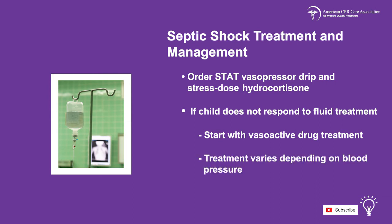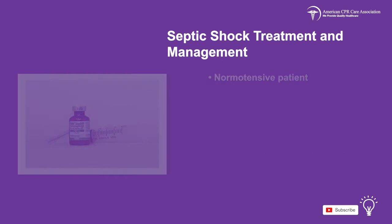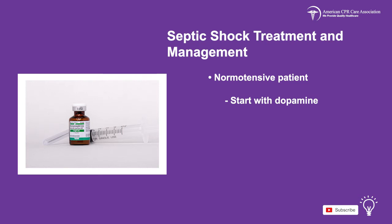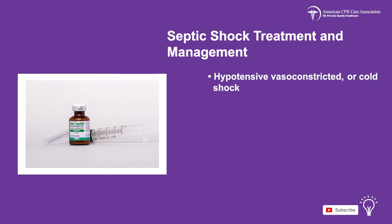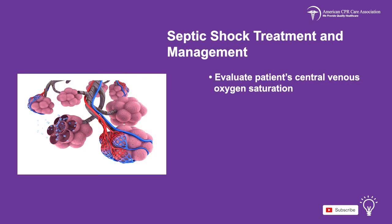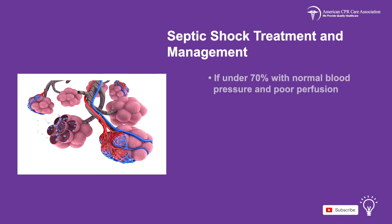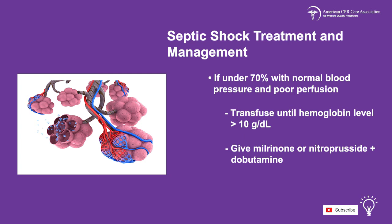If the child does not respond to fluid treatment, start vasoactive drug treatment. The treatment you initiate will vary depending on blood pressure. For a normotensive patient, start with dopamine. For hypotensive vasodilated or warm shock, start with norepinephrine. For hypotensive vasoconstricted or cold shock, start with epinephrine. Then evaluate the central venous oxygen saturation, keeping in mind that a normal range is between 70 and 80%. If the patient is under 70% with normal blood pressure and poor perfusion, transfuse until a hemoglobin level of more than 10 grams per deciliter is reached. You may also consider giving milrinone, nitroprusside, and dobutamine.